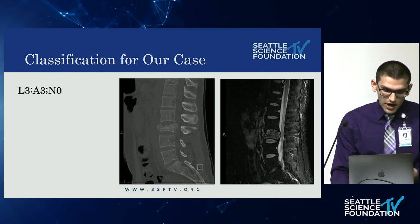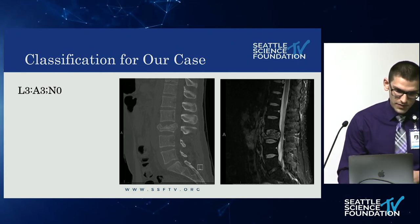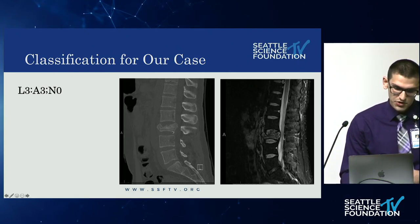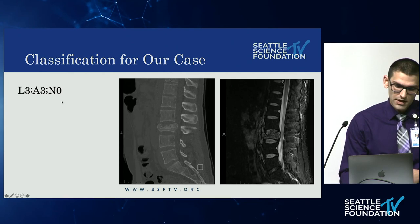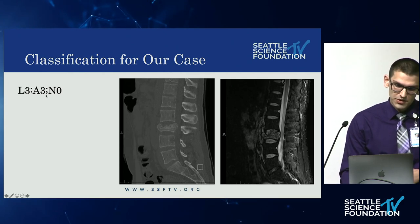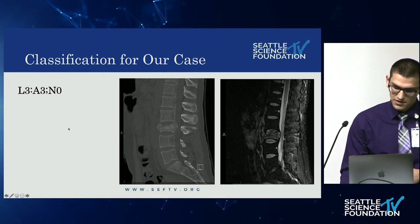For our case, since it's an L3 burst fracture, we classify it as L3-A3 because it's an incomplete burst, and N0 because the patient is neurologically intact.